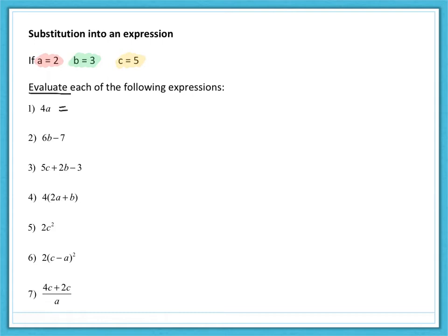So number one, four a means four lots of a or four times a, but we know a is equal to two in our example. So this gives us four times two, which is eight. So substitution means we are replacing the letter with its numerical value and then performing the appropriate calculation. So we have six b take away seven. So that's six multiplied by b, which is three minus seven. And we simply work it out following our laws of BIDMAS. So 18 take away seven. This gives us an answer of 11.